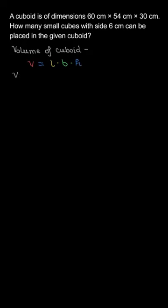We can say volume of cuboid equals L times B times H. Volume of cube, this formula is side cubed, side times side times side.